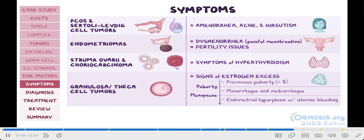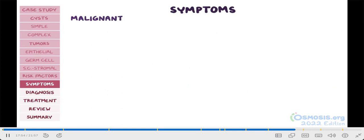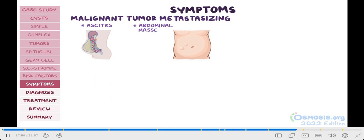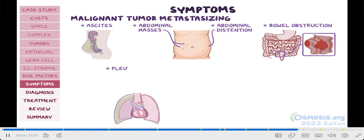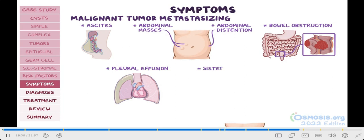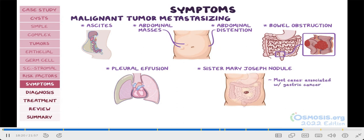Now, in more severe cases, symptoms may arise from a malignant tumor metastasizing to other organs. This can present as ascites, abdominal masses, abdominal distention, bowel obstruction, lymph node masses, or pleural effusion. An especially high-yield clue for metastatic ovarian cancer is also a Sister Mary Joseph nodule, which are bumps found around the umbilicus or belly button. However, it's extremely important to remember that in most cases, Sister Mary Joseph nodules are associated with gastric cancer.